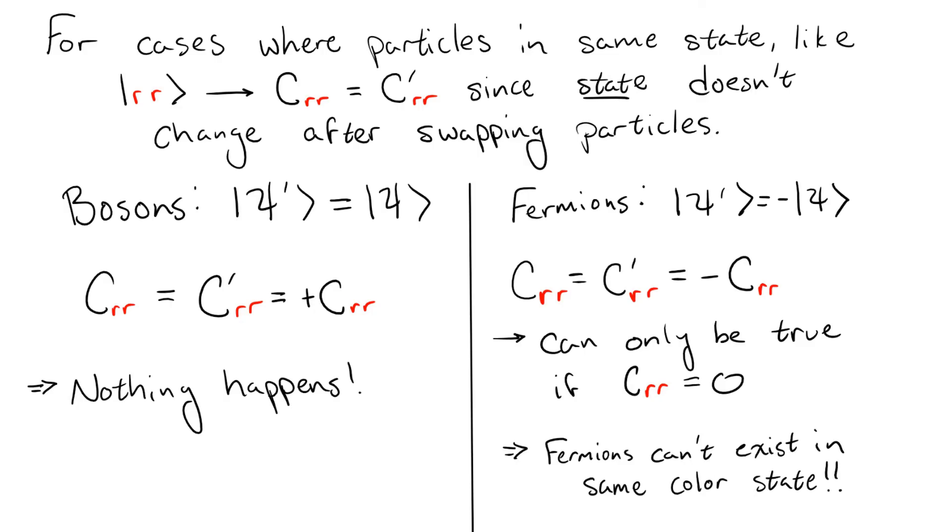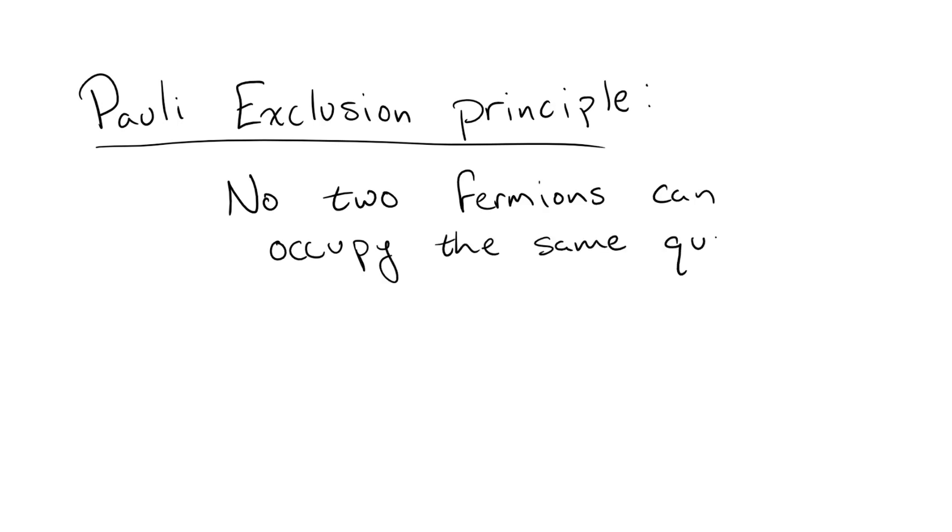In fact, this is true more generally and is summed up in what's known as the Pauli Exclusion Principle. No two fermions can ever occupy the same quantum state.